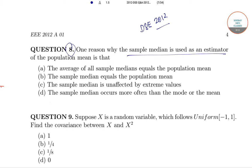One reason why the sample median is used as an estimator of the population mean is that: (a) the average of all sample medians equals the population mean, (b) the sample median equals the population mean, (c) the sample median is unaffected by extreme values, (d) the sample median occurs more often than the mode or mean.